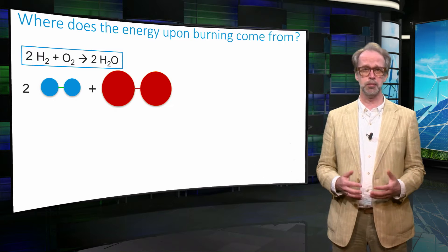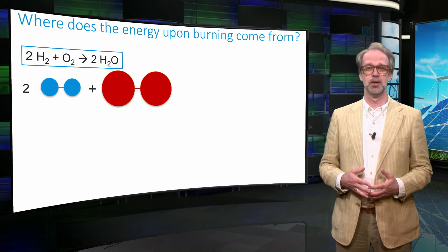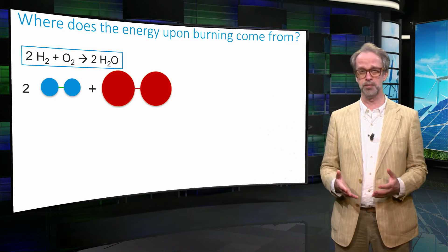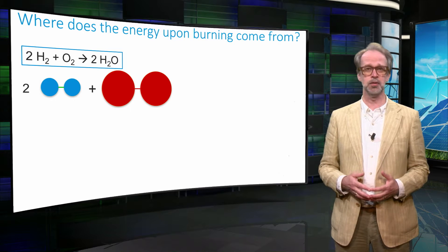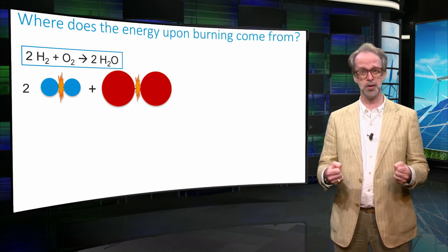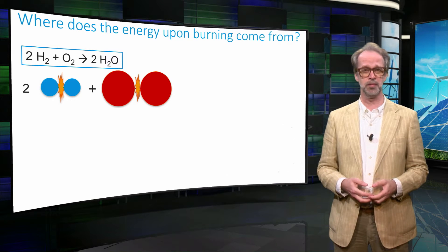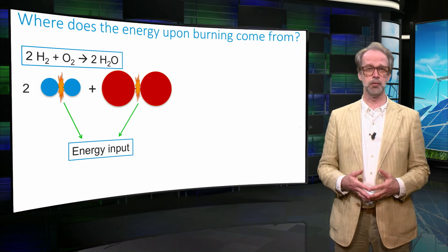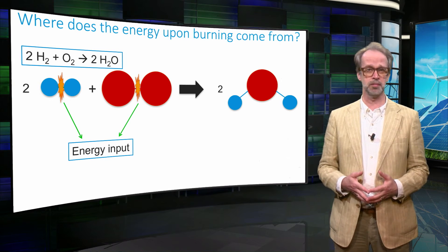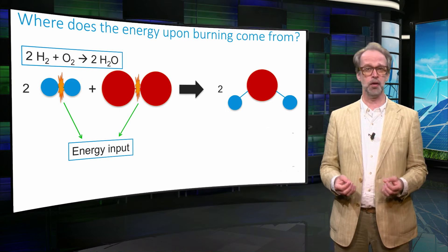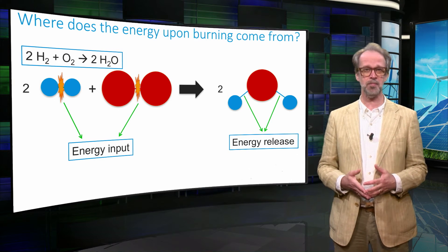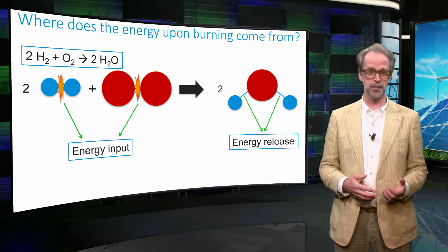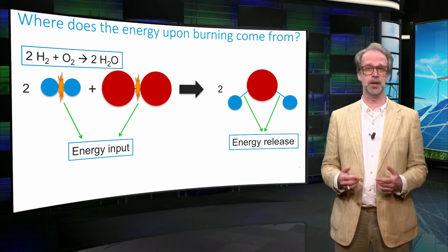The burning of hydrogen is represented by the following chemical formula. Two hydrogen molecules react with one oxygen molecule to form water. In this reaction we first need to break the chemical bonds between the oxygen and the hydrogen molecules. This requires an energy input. The atoms then rearrange and form new chemical bonds. When stable bonds are formed, the energy is released. We define the difference between the energy input and the energy released as the amount of energy that was stored in the hydrogen.